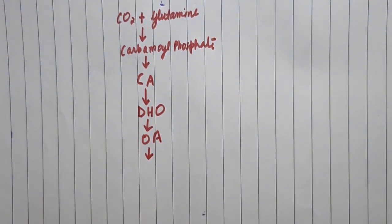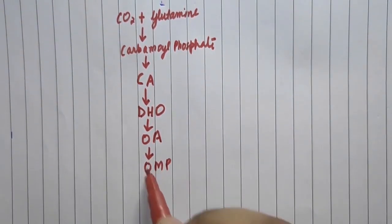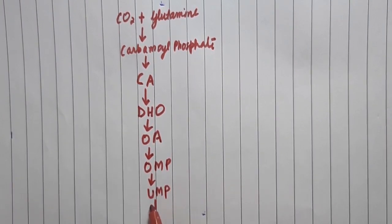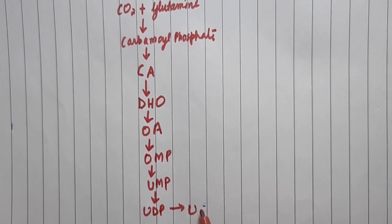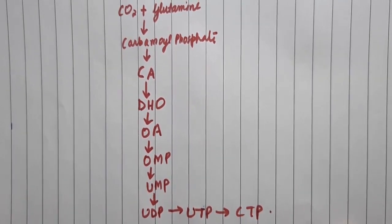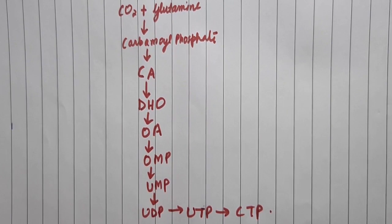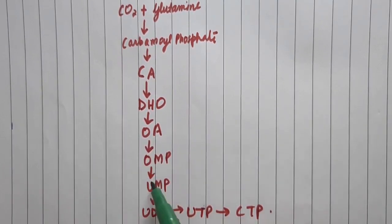After OA, the synthesis is very simple: OA to OMP, then OMP to UMP, then UMP to UDP, and then UDP to UTP.